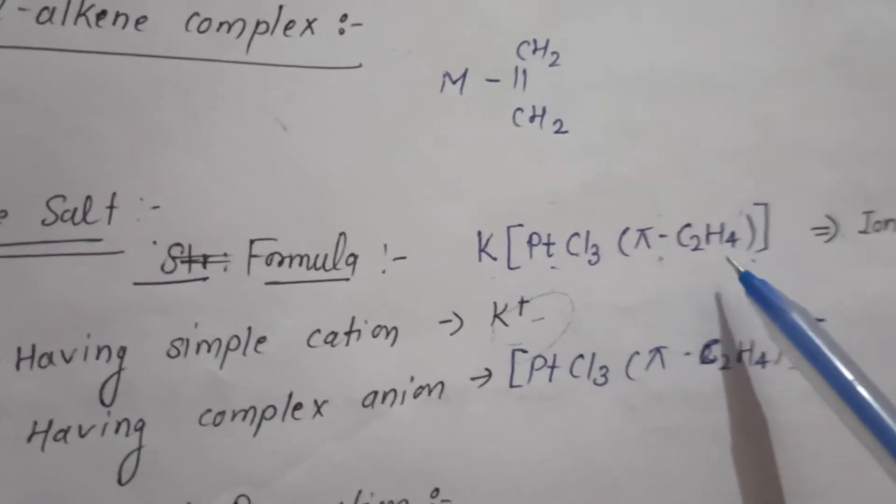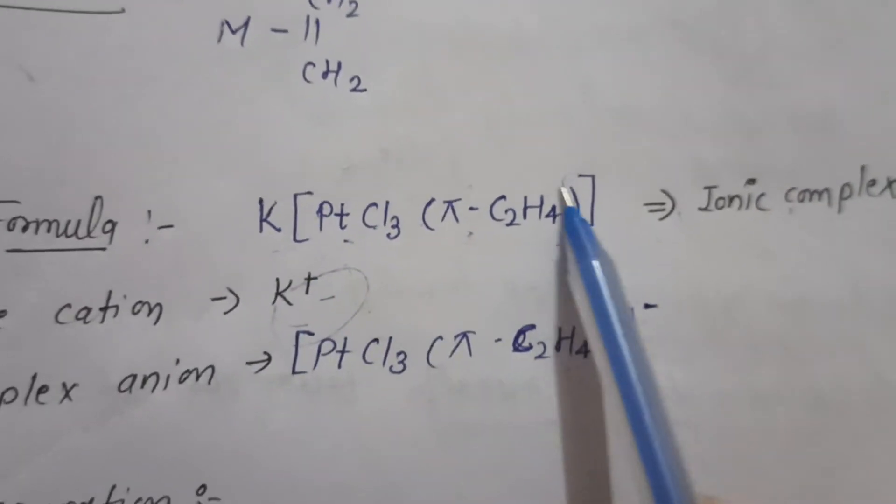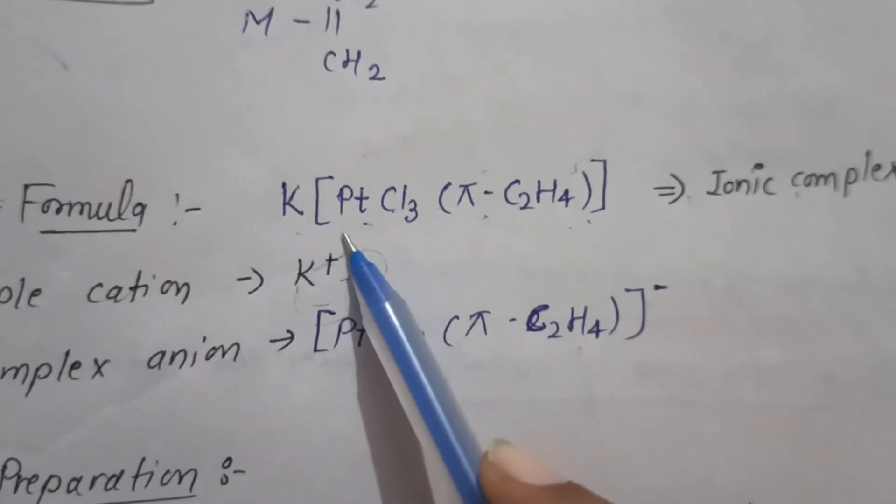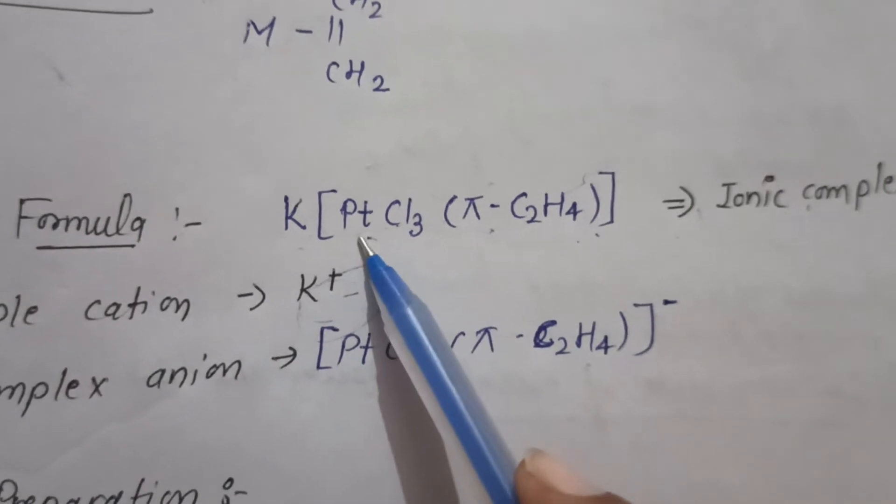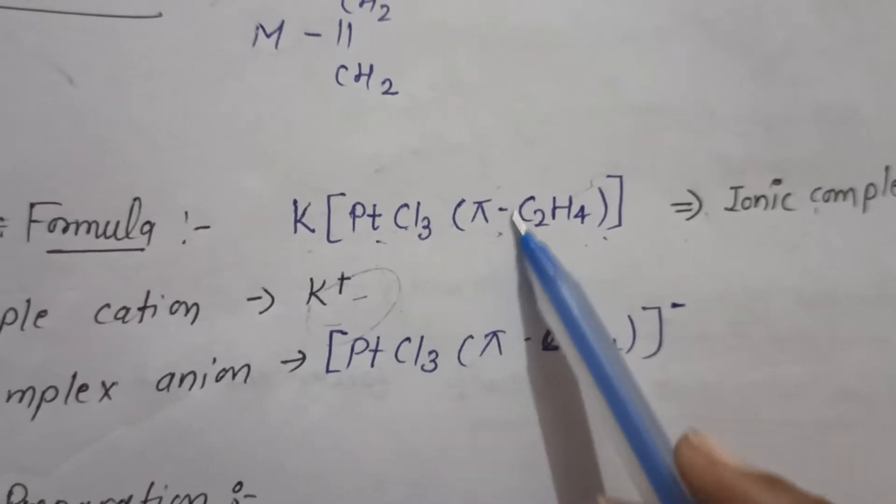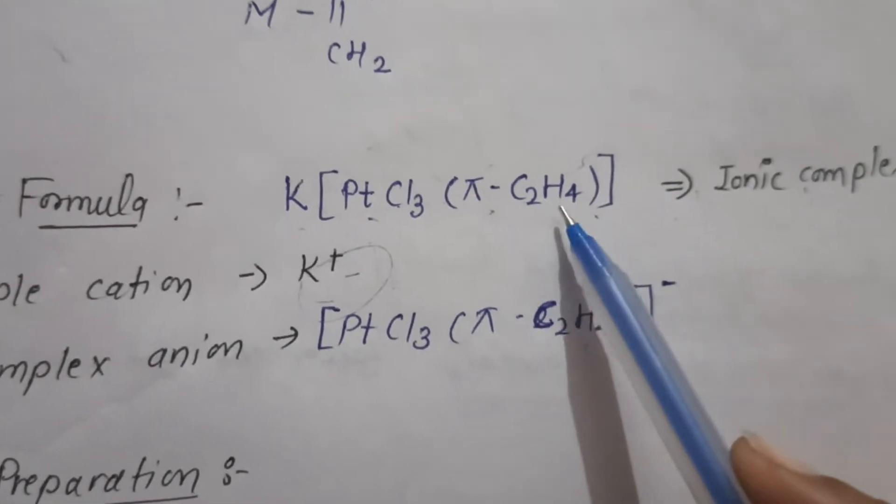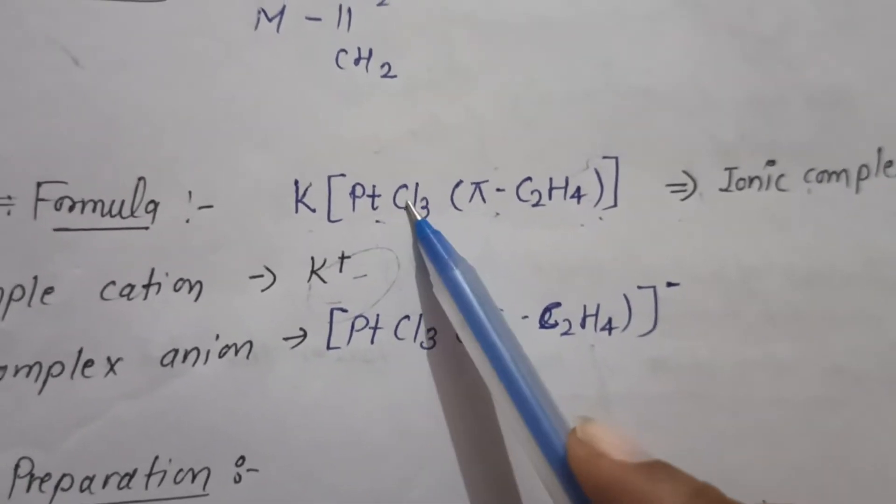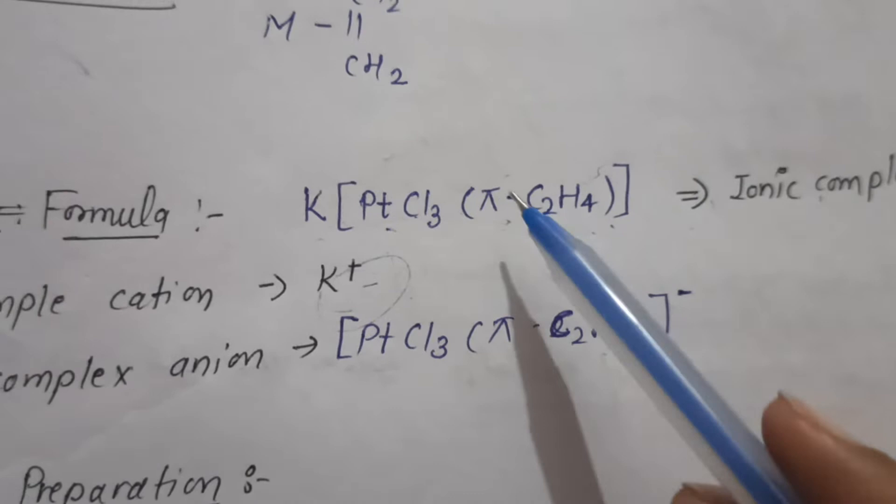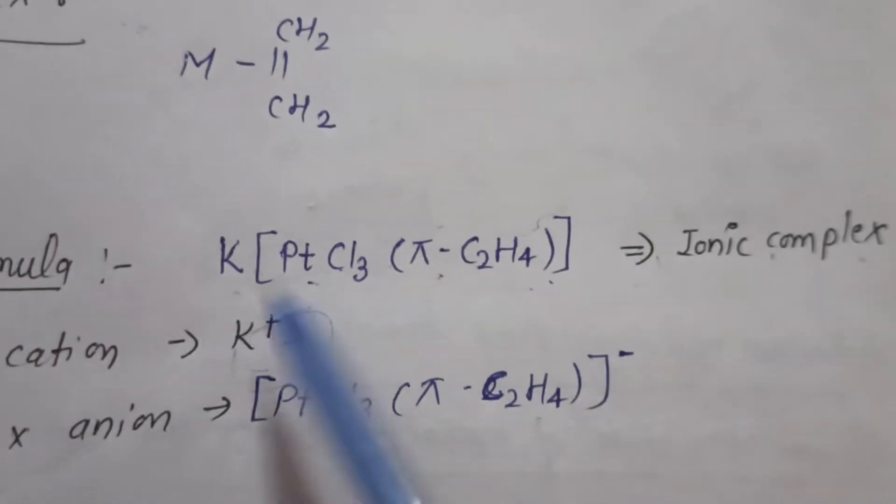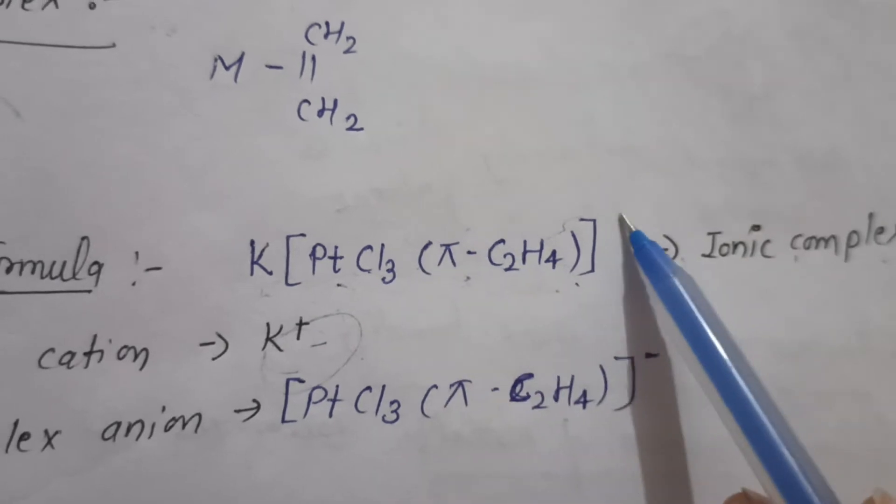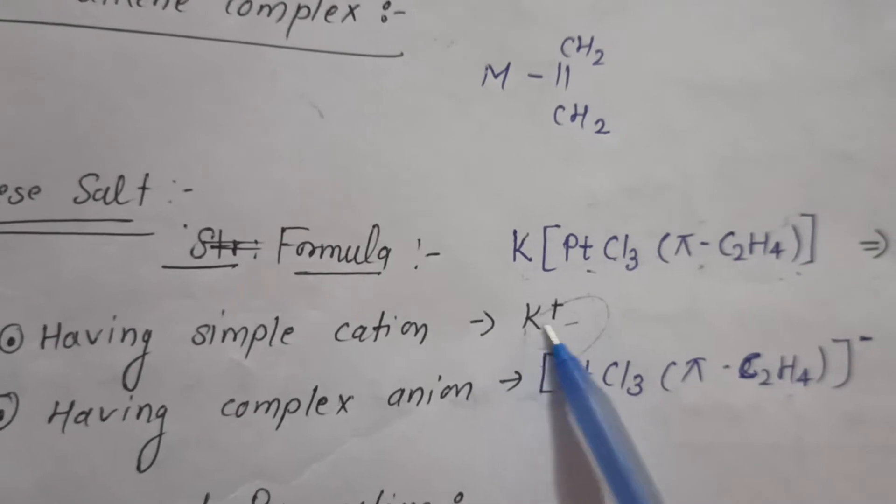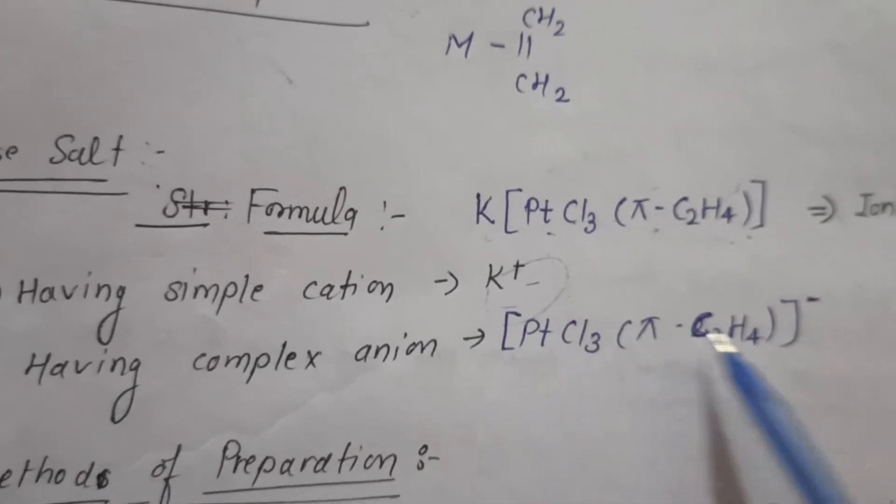This is a simple cation that is potassium and this is anion that is Pt platinum Cl chlorine pi C2H4, means it has been made with alkyne. What will become the ionic complex? K-positive and this whole will be negative. You can see K-positive and [PtCl3(π-C2H4)] is negative.